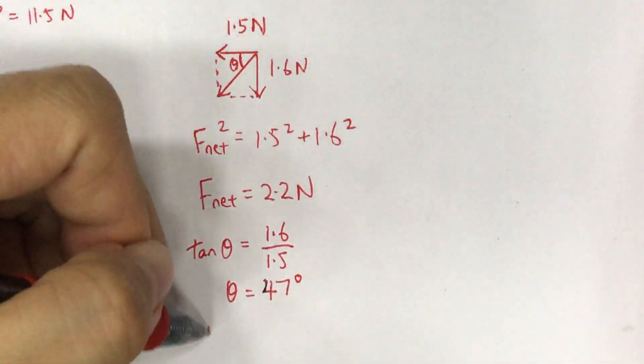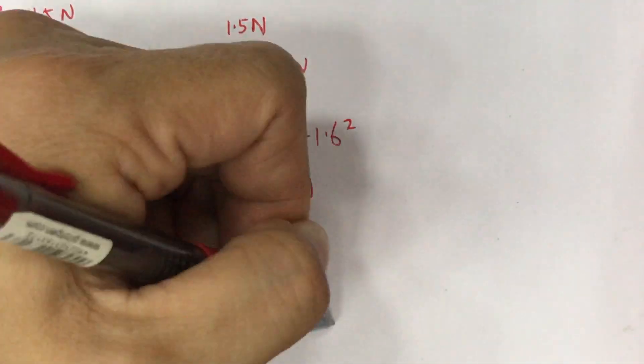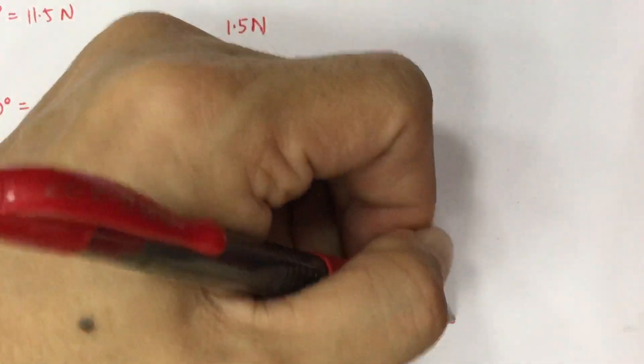So we can say finally that the net force is 2.2N at an angle of 47 degrees to the horizontal line.